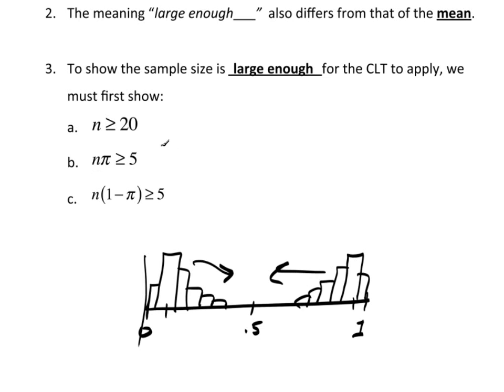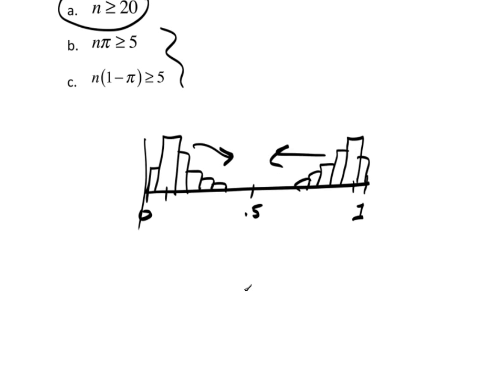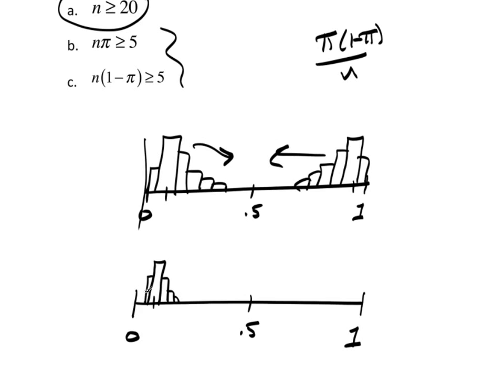But, what happens? If n times pi is at least 5, what that means is n is big enough, such that if I am really close to one of these ends, say over here, n is big enough that the variance pi 1 minus pi over n, this becomes small enough that even though I'm really close to 0, I will get something that looks reasonably normal because the variability is small enough, it's more compact.